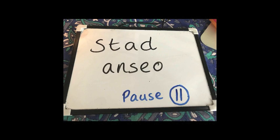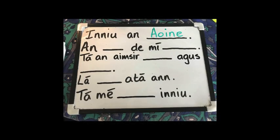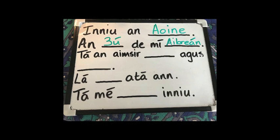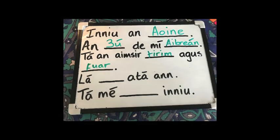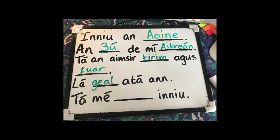You can come back to that at any time and go over it. Here are some answers: Inniu an Aoine. An Aoine. An tríú lá de mhí Aibreán. Tá an aimsir tirim agus fuar — dry and cold. Lá geal a tá ann — it's a bright day.